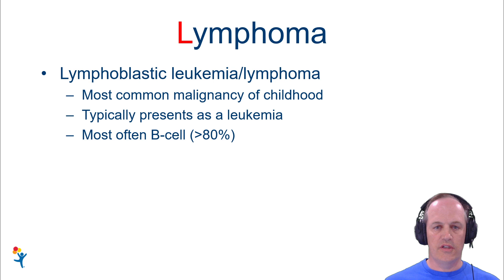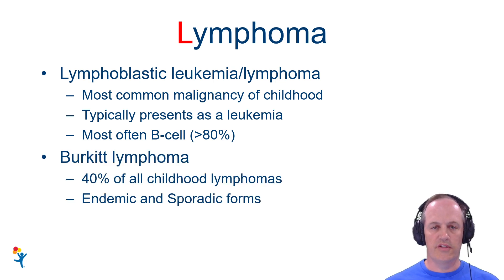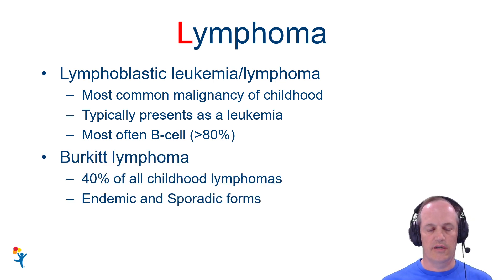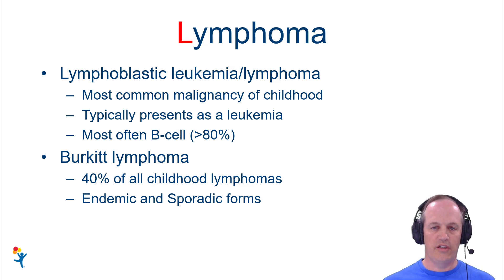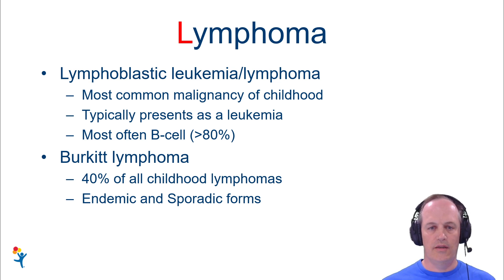In addition to lymphoblastic, you're also going to see things like Burkitt lymphoma that's going to present as a solid tumor, a lot of times associated with the terminal ileum. This is about 40% of all childhood lymphomas. If somebody was going to ask you quiz questions about this, you'd want to know about endemic and sporadic, and we'll talk about that in a little bit.